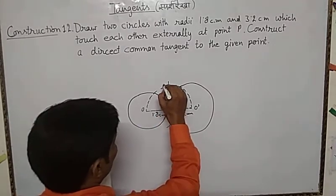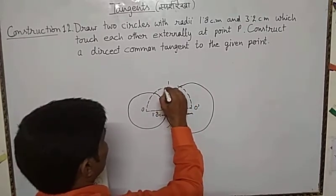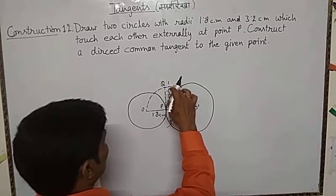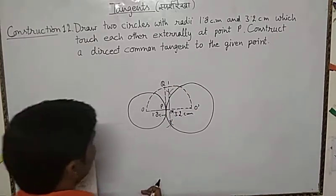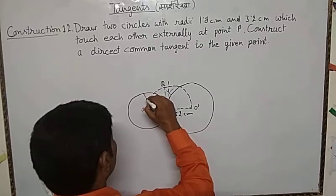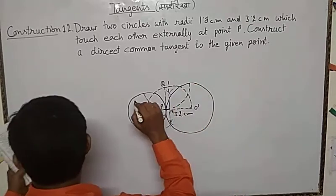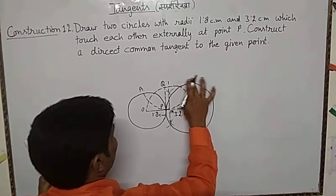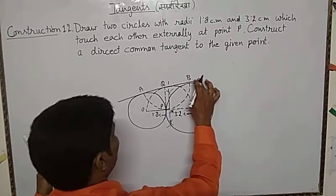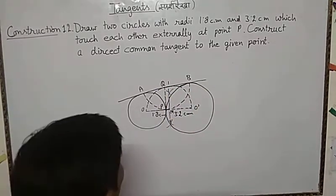After that, we should draw from P to the constructed circle in this type. When we find this point Q, then with the distance of Q and P, mark Q at the center, draw a circle from P. You will find two points A and B. From A and B, draw a line — this is your common tangent or direct common tangent.